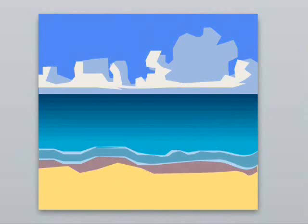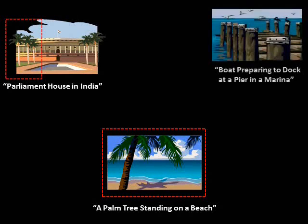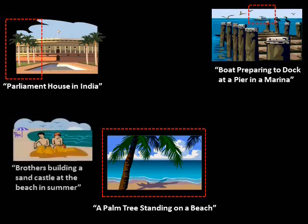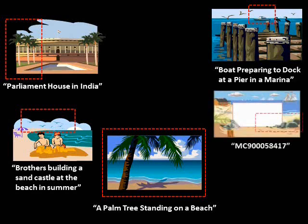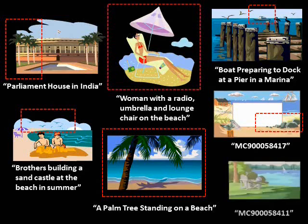We're going to paste in objects from other pictures, and I'll show you what we'll take from each one. So here we have our beach scene. From the parliament house, we'll take the palm trees. From the dock scene, we'll take the boat. And from this beach, we'll grab the birds. From here, we'll take the rocks. We'll take the woman minus the sand. And we'll take everything from here except that chair.